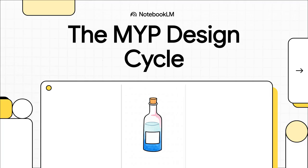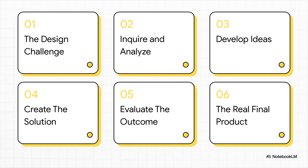We're going to follow the journey of one student as they decide to take on a massive global issue right from inside their own school. So here's the game plan. We'll kick things off with the big challenge, then walk through the four main steps of the design cycle: inquire, develop, create, and evaluate. And then at the end we're going to uncover what the real final product of this whole thing actually is. Trust me, it might not be what you think.